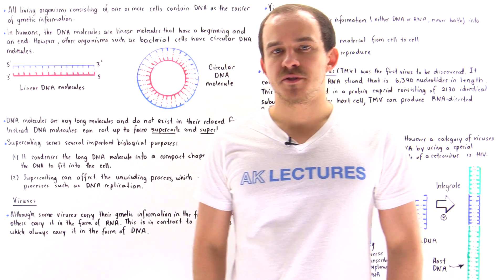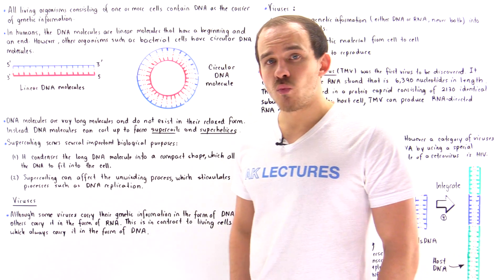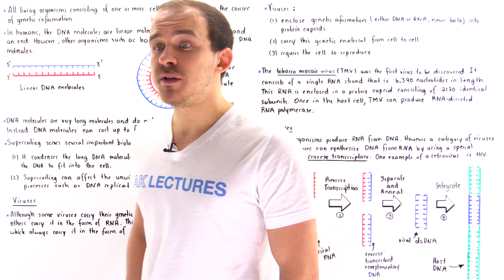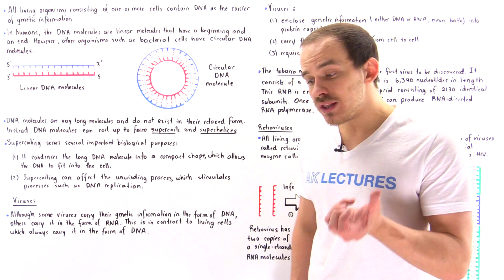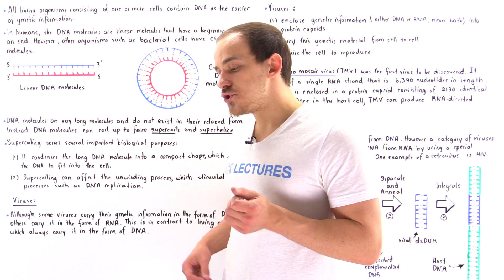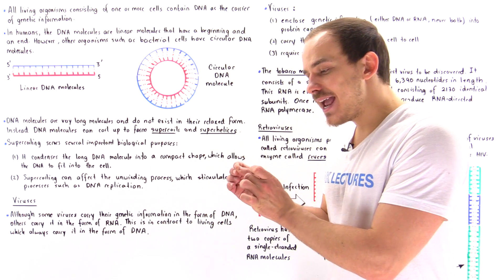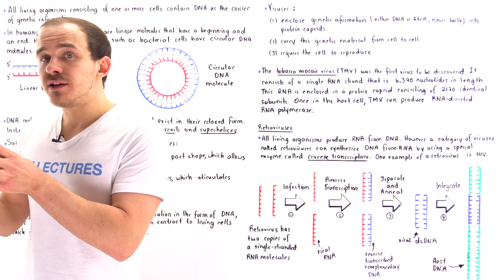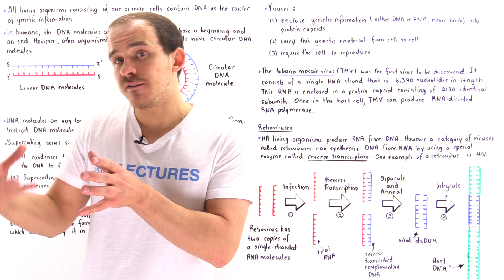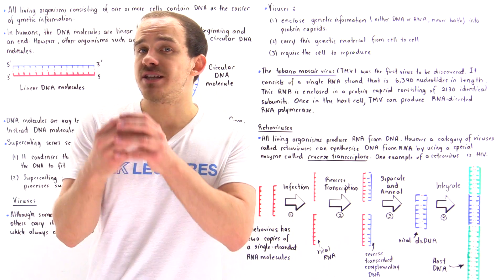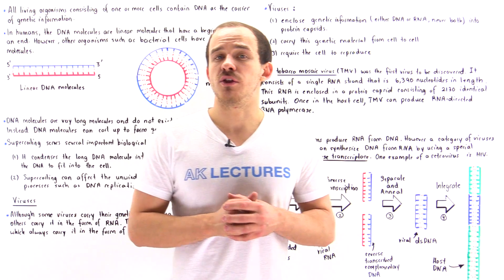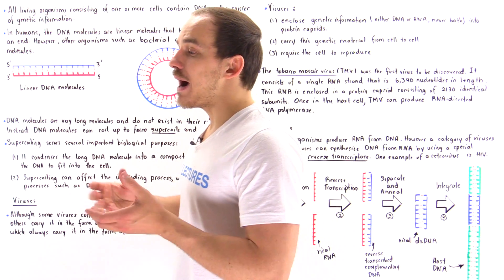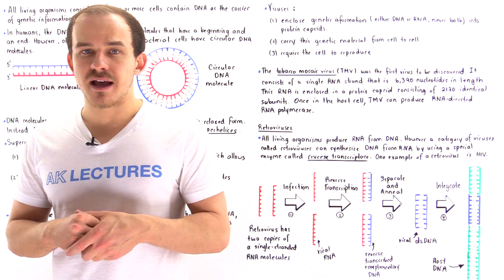In nature, all living organisms — beginning with very small ones such as individual bacterial cells and ending with very large complex ones such as human bodies that consist of trillions of individual cells — all living cells contain DNA as the carrier of genetic information. The DNA molecule stores genetic information that is transcribed into RNA, and then the RNA is used to synthesize the many different types of proteins needed by that cell to survive.